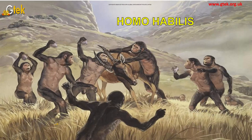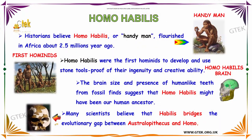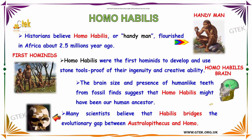Now we are going to see about Homo habilis. Historians believe Homo habilis — meaning 'handyman' — flourished in Africa about 2.5 million years ago. Homo habilis were the first hominids to develop and use stone tools, demonstrating their ingenuity and creativity. Brain size and the presence of human-like teeth from fossil finds suggest Homo habilis might have been our human ancestors. Many scientists believe that habilis bridges the evolutionary gap between Australopithecus and Homo.